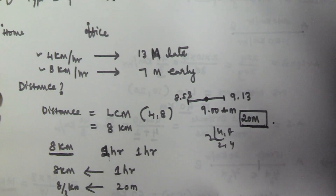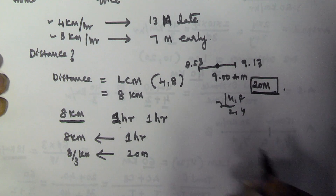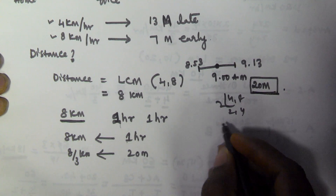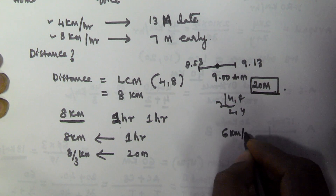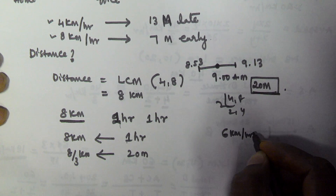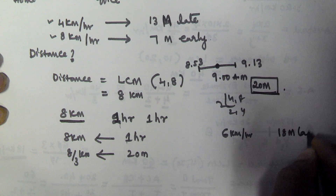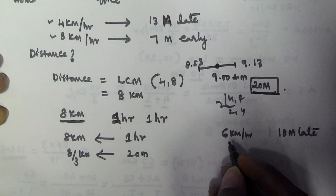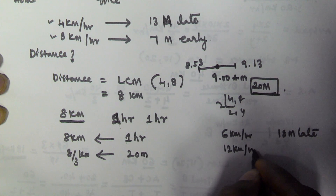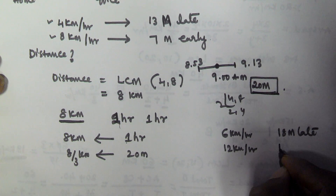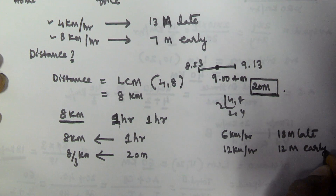Let's see another example. A person traveled from his home to office at 6 kilometers per hour and reached his office 18 minutes late. The next day, he traveled at 12 kilometers per hour and reached 12 minutes early. Find the distance between his home and office.